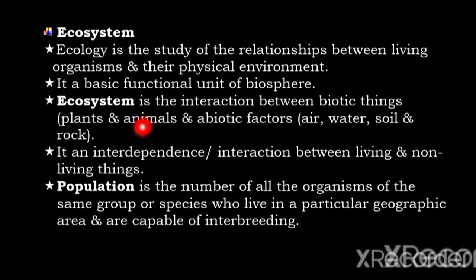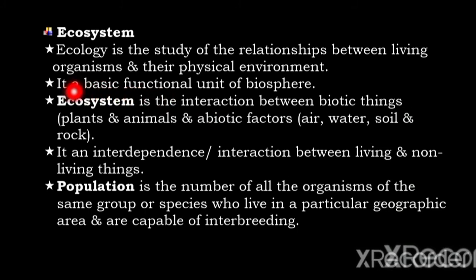So ecosystem is the interaction between biotic things and abiotic factors, or the interaction between living things and non-living things, and this is called ecosystem. Ecosystem is a basic functional unit of the biosphere. The smallest unit of the biosphere is called ecosystem.